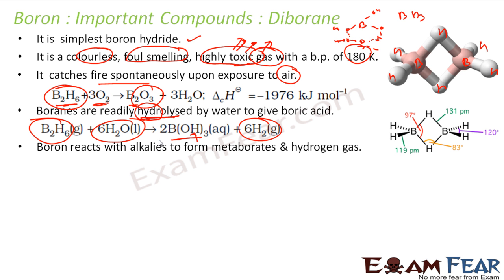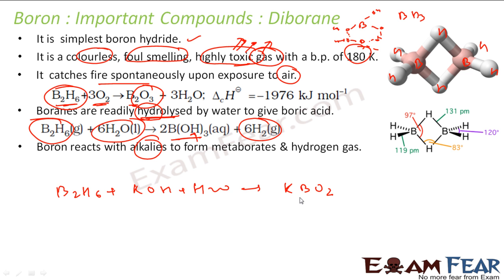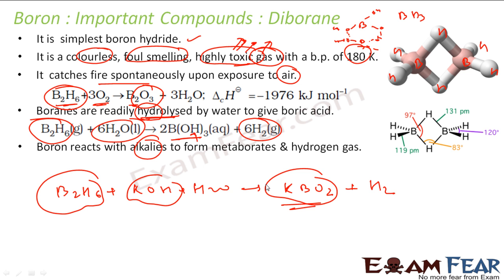Diborane also reacts with alkali to form metaborates and hydrogen gas. For example, reacting B2H6 with potassium hydroxide in aqueous solution gives KBO2 — potassium metaborate — and hydrogen gas. Balancing the reaction: two potassium, two water molecules, two KBO2, and six H2 are produced. This reaction is now balanced.